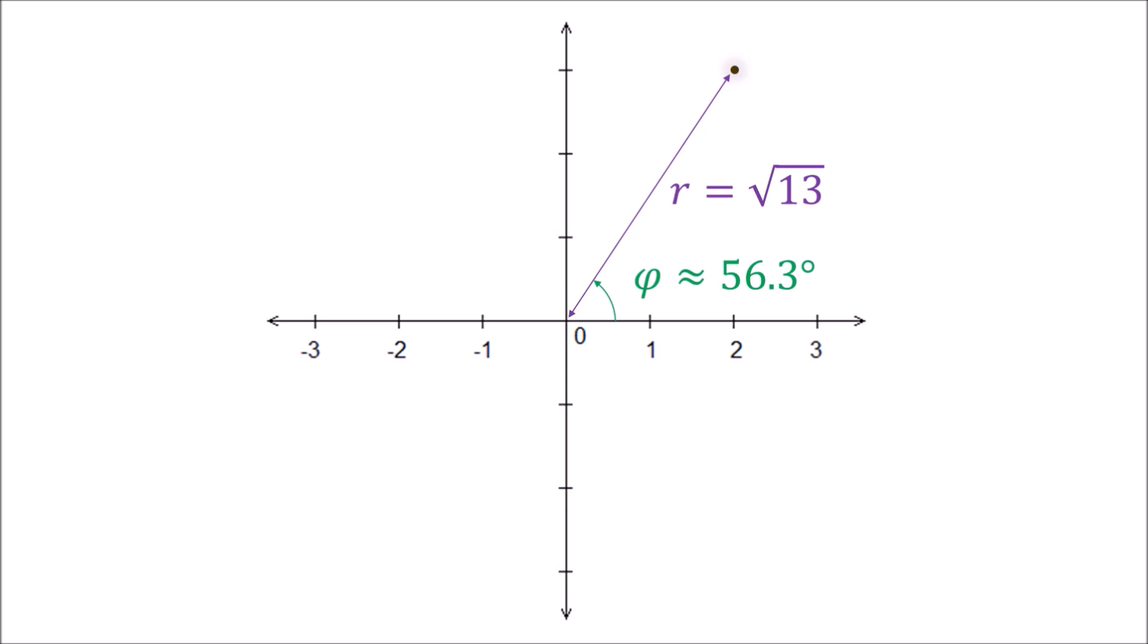Now we can our former Cartesian way of expressing transform in a polar way. With goniometry, we can see that the real distance of 2 is the same as square root 13 times the cosine of 56.3.